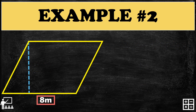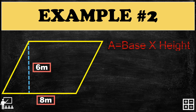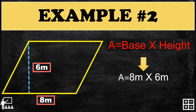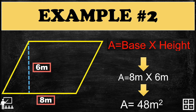Let's try another example. A parallelogram has a base of 8 meters and a height of 6 meters. Using the formula A equals base times height, substitute 8 meters and 6 meters. Multiplying 8 times 6 gives 48, so the answer is 48 meters squared.